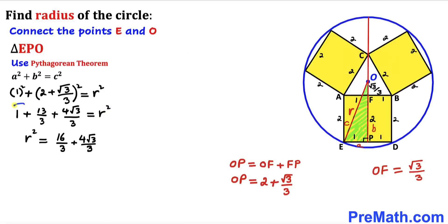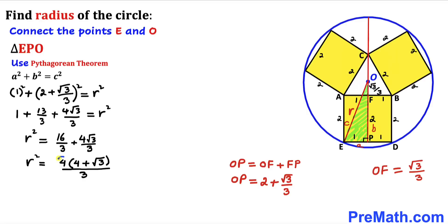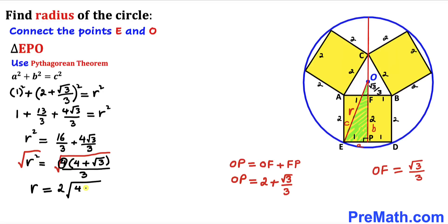Adding 1 plus 13/3 gives 16/3. Factoring 4 as common in the numerator, we get r² = (4/3)(4 + √3). Taking the square root on both sides, r equals 2 times the square root of (4 + √3) divided by 3.